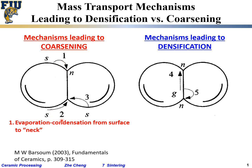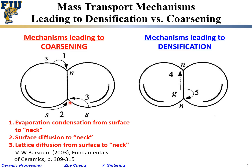Another route is mechanism two, which people call surface diffusion. The atoms move along the surface — they do not go into the gas or vapor phase — but move along the surface from the surface into the so-called neck location. The third one involves vacancies, going from the surface into the neck location.